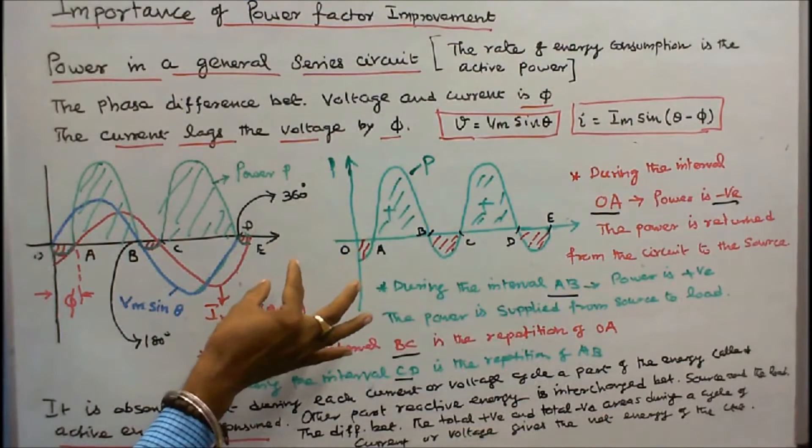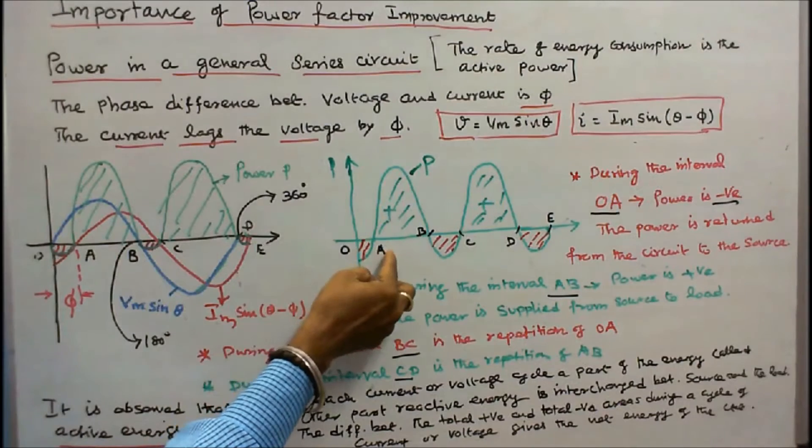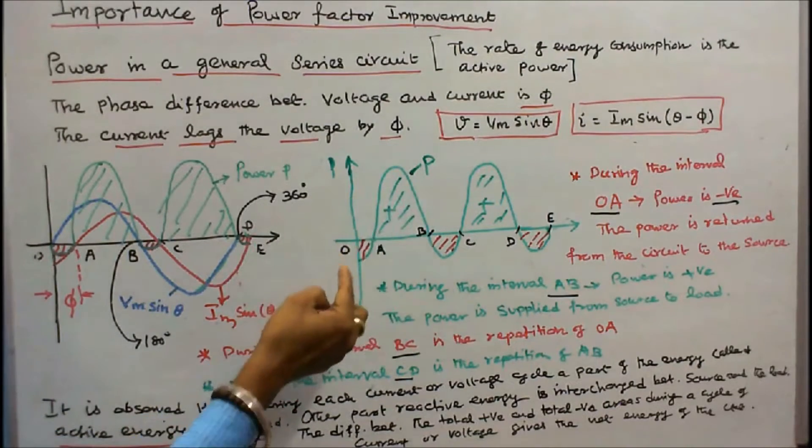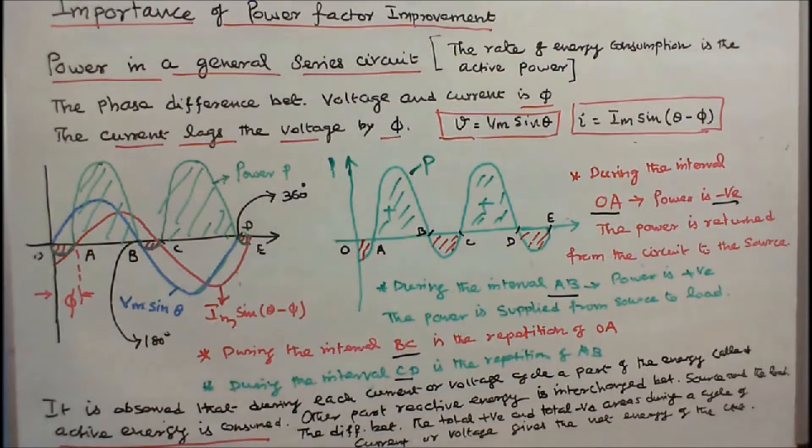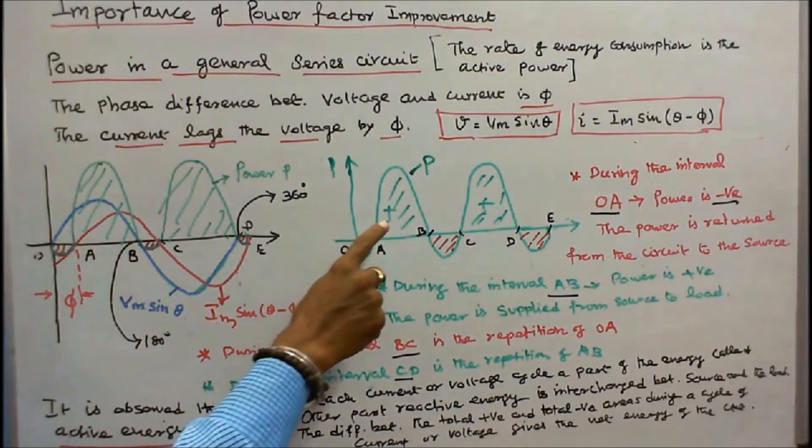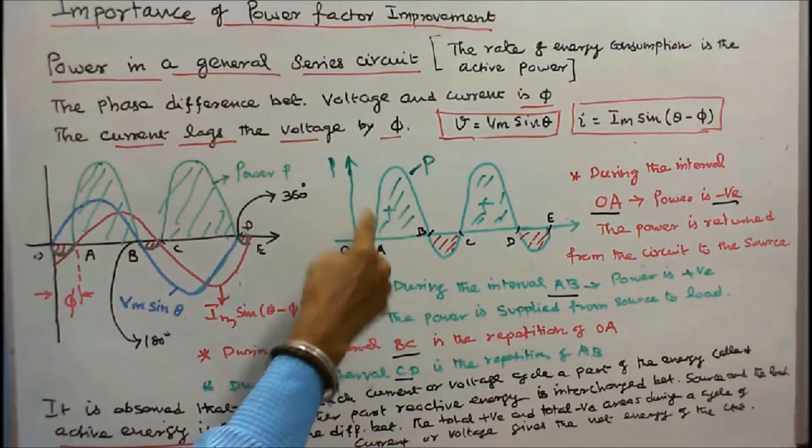During the interval A-B the power is positive. That means the power is supplied from the source to load.